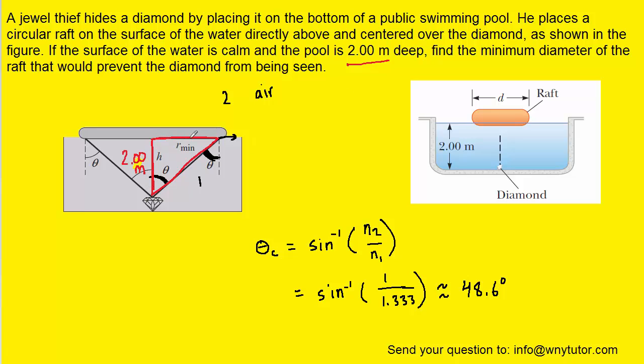Now what we really want to calculate is this distance right here what we've labeled as R and that represents the radius of the raft. We can see that the radius of the raft is opposite our angle and the 2 meters is adjacent to that angle.